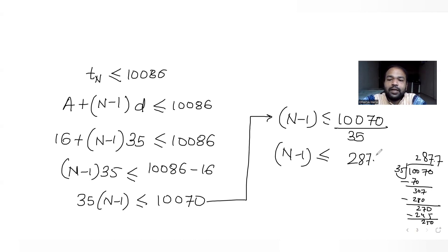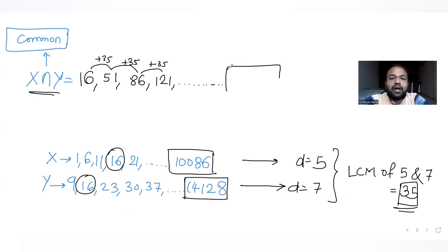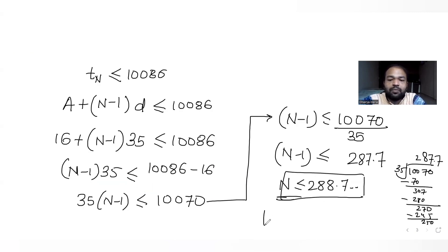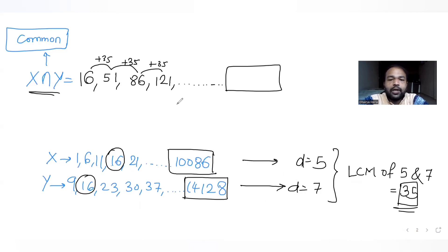So n must be less than 288.7, meaning we cannot have 0.7 of a term. To find the largest possible number of terms, we take n = 288. So there are 288 terms in the intersection list of common terms of sets X and Y.